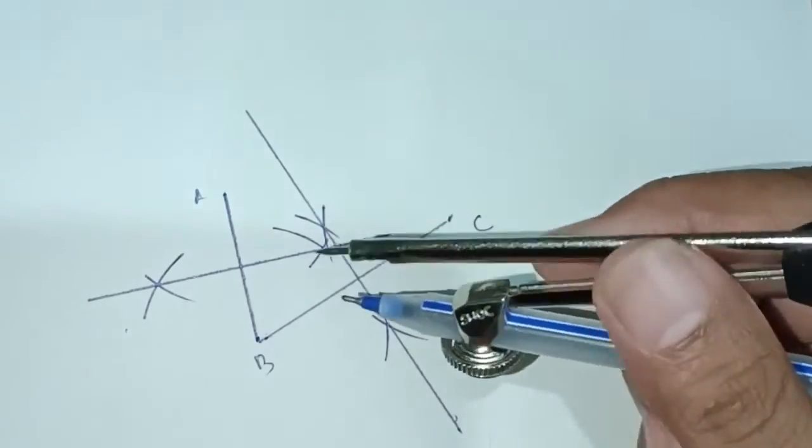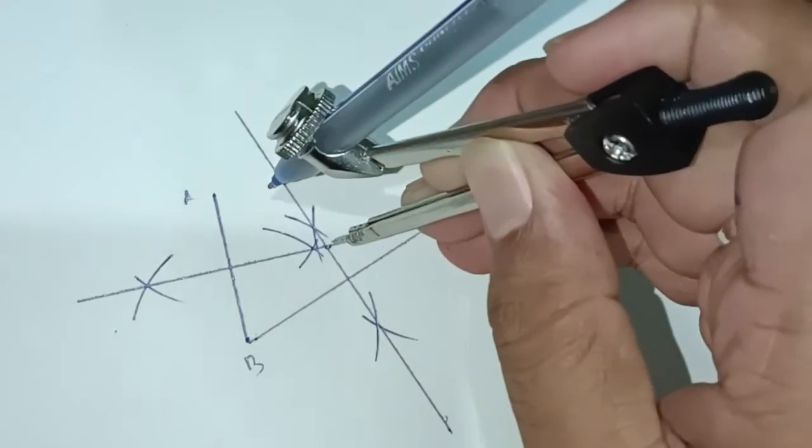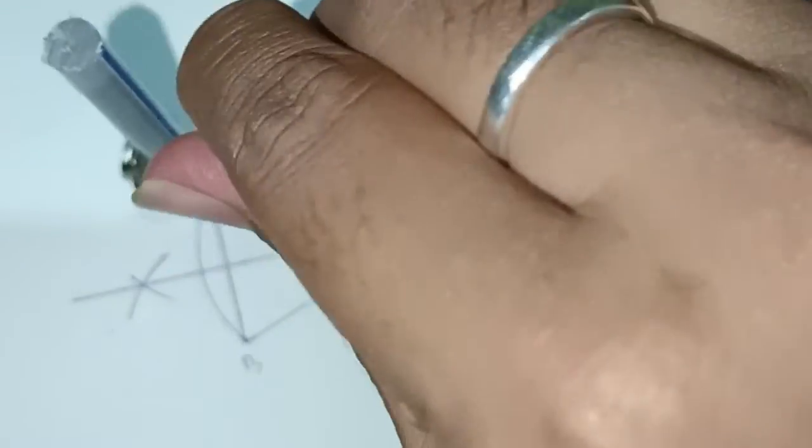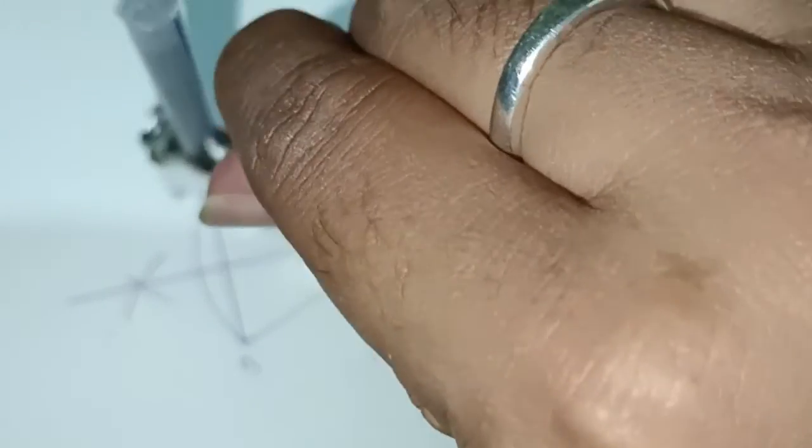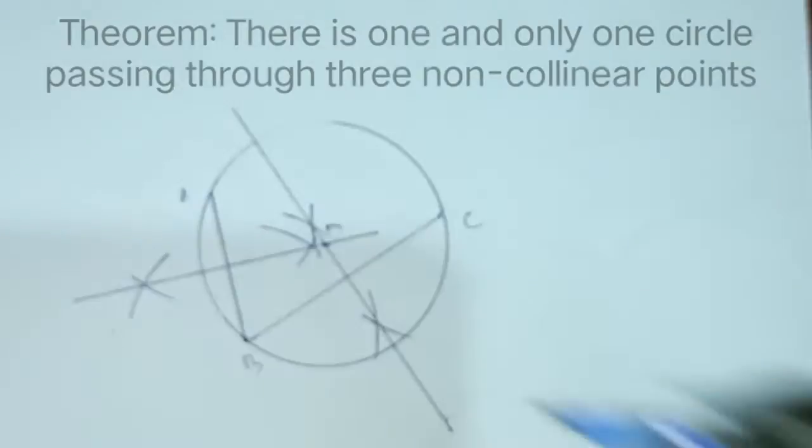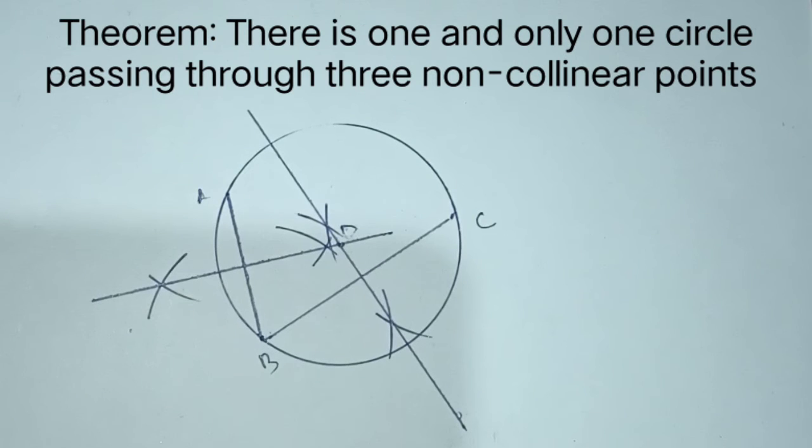Take this as the center and we'll get one circle which passes through these three points exactly. This is the proof of the given theorem. Thank you.